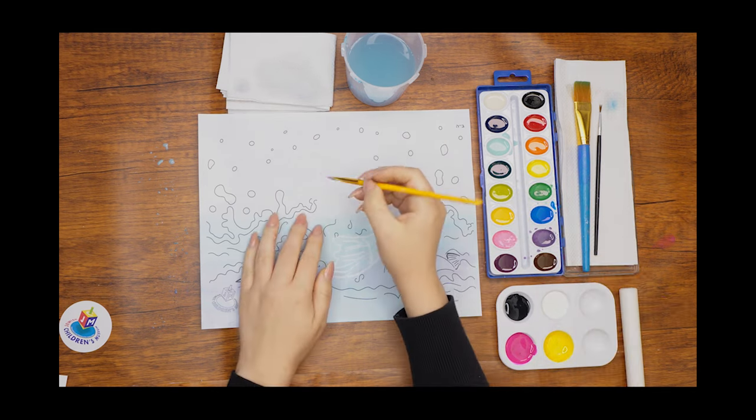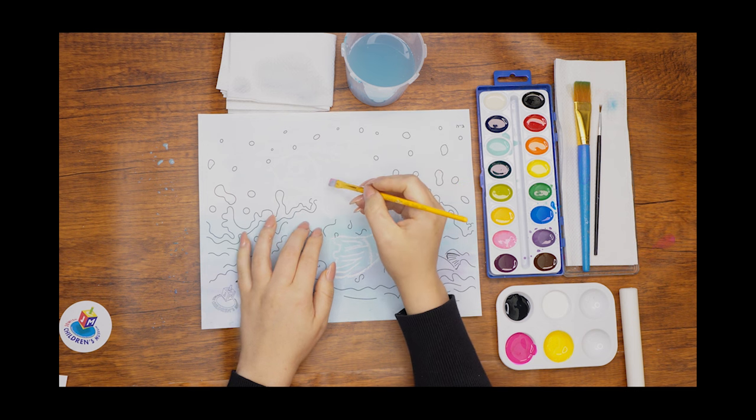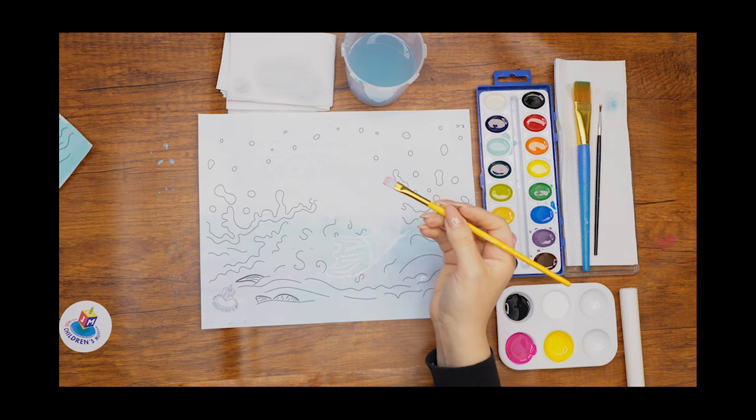Next we will paint the body of the fish pink and its tail, head, and fins yellow, though you are welcome to choose a different color scheme if you wish.